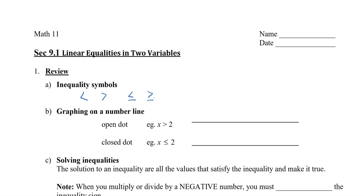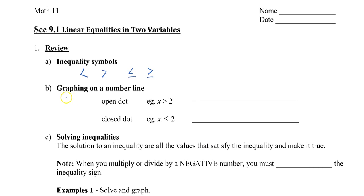To start us off, let's take a look at one variable first, and then we'll go to two variables. Graphing on a number line: when you see a less than or a greater than, and it doesn't have the line on the bottom, we're going to show these solutions with an open dot.